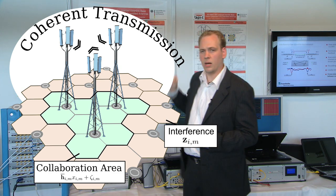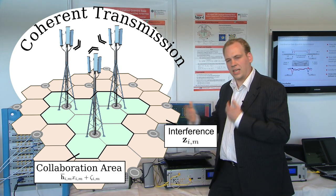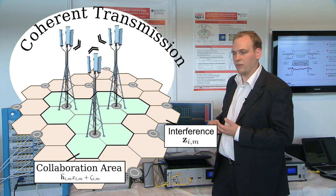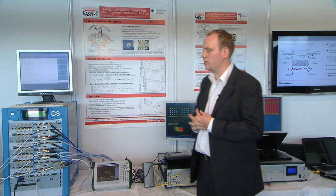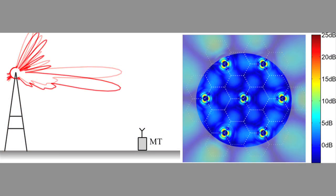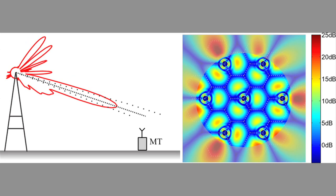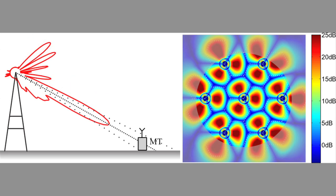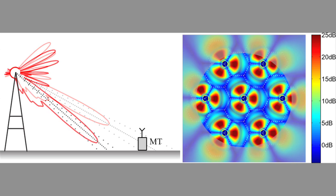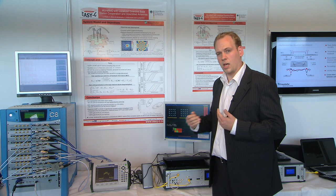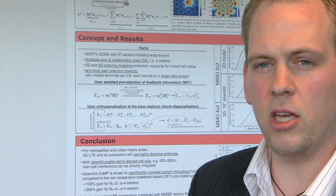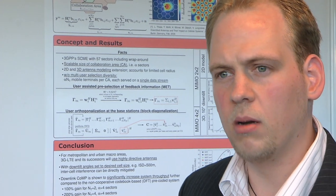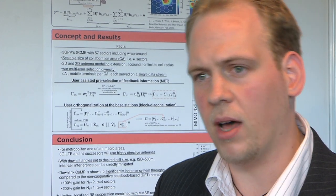We have a collaboration area in the middle which is scalable in size, which is of course again a factor which makes it more feasible in a real system. For system level simulations, it is quite important to focus on the channel modeling part. We do this by taking different propagation scenarios into account, by taking for example 3D antenna models, and we do our performance evaluation by using channel-aware precoding as well as advanced receiver techniques.